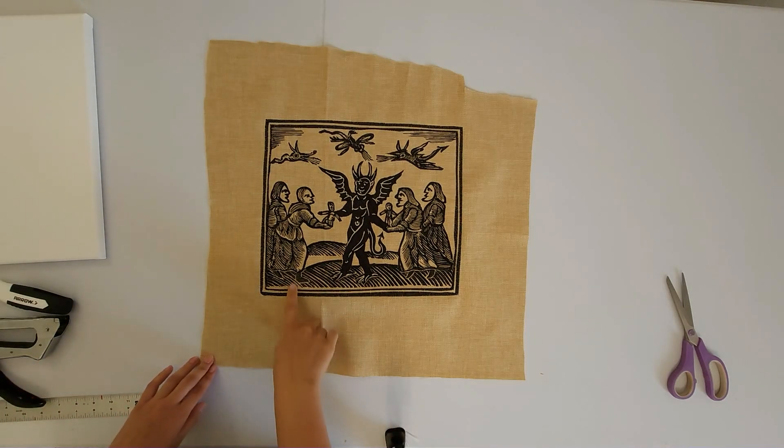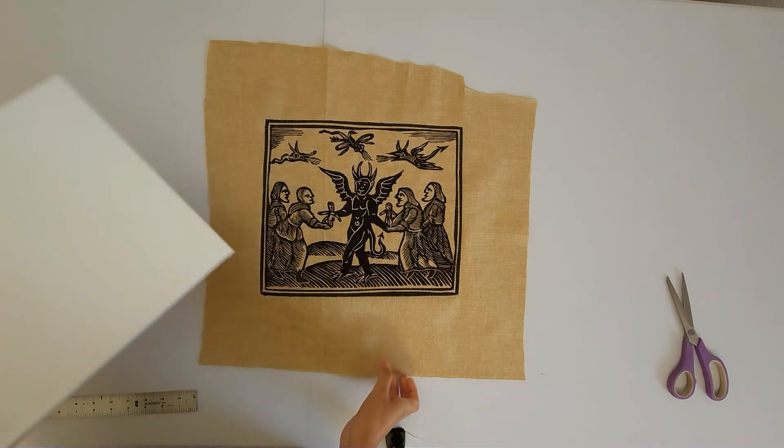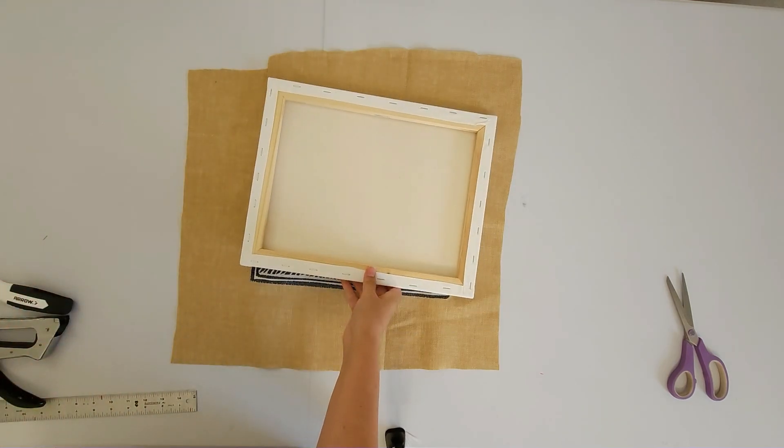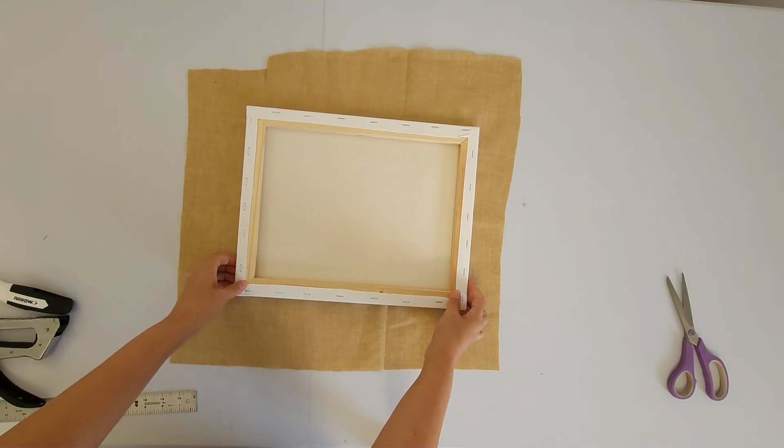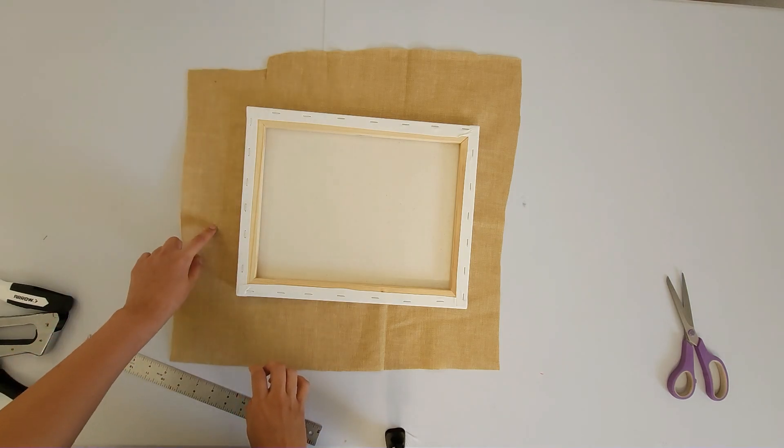So I'm also going to want to clean up the edges here a little bit so I don't have too much excess fabric. What I like to do is I'll place my canvas right over the embroidery and then I'm going to measure how much fabric I actually need.